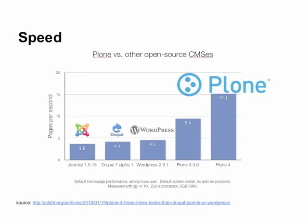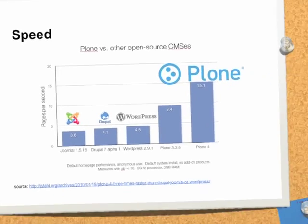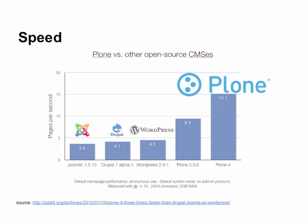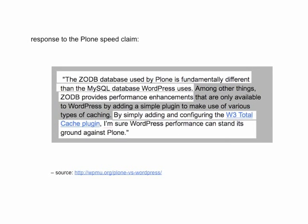Out of the box, Plone is fast. We're talking about speed now — Plone versus the other content management systems out of the box. Bigger is faster and better. This is Plone, this is WordPress, Drupal, Joomla. All lower. They need to update the numbers.